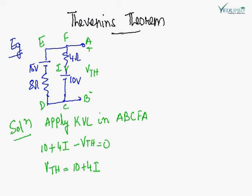Now we will apply KVL in the loop ABCFA. So in this loop, we will apply KVL. The equation is this. So VTH is 10 plus 4I.